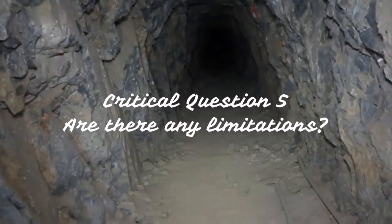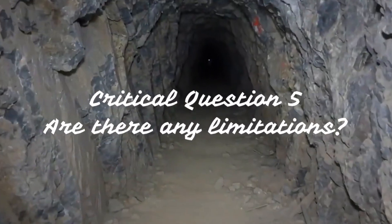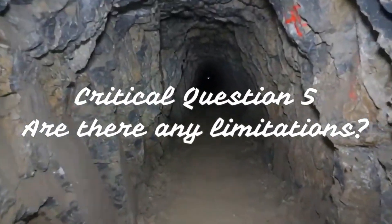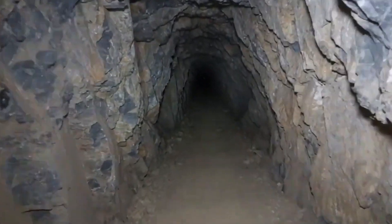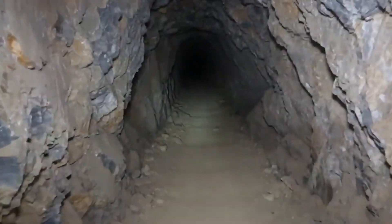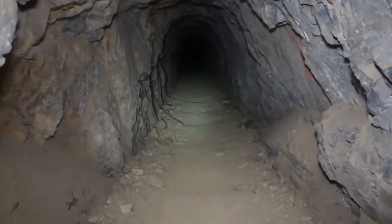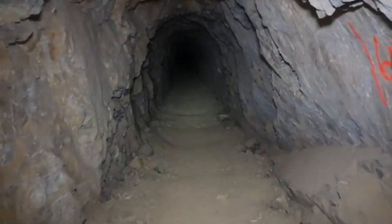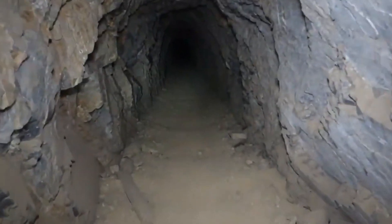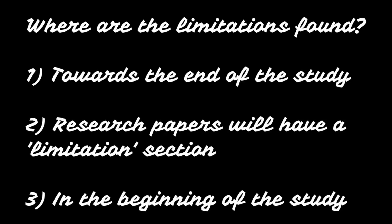Critical question number five: are there any limitations? Many academic studies state their limitations or state how their study can be improved. You can pit their own limitations against them — you can use their own words against them. Generally, you will find these limitations in one of three places: towards the end of the study, where the author will come clean and admit to some of the failings of their paper.